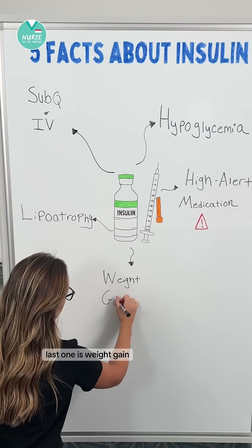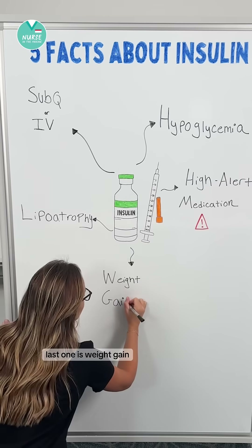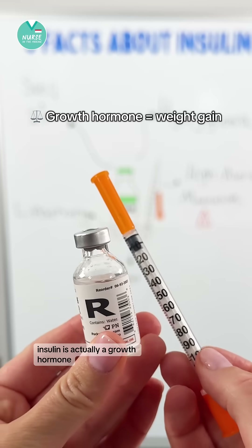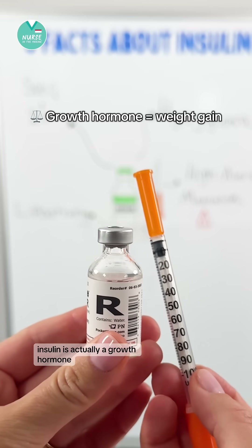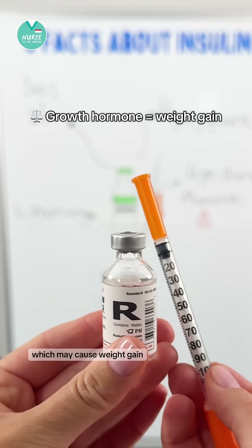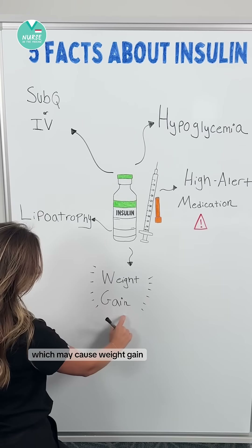Last one is weight gain. Insulin is actually a growth hormone, which may cause weight gain.